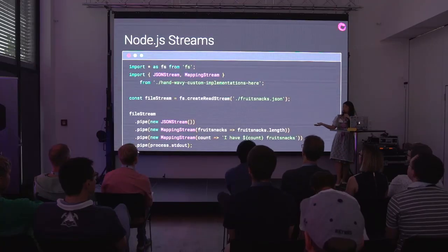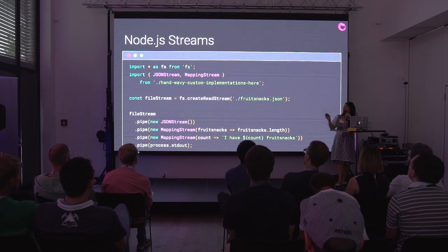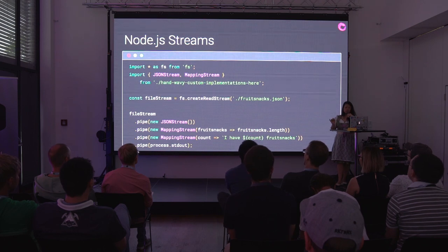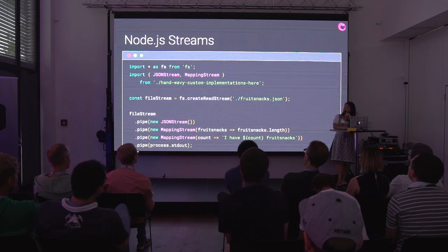Looking at Node streams code, we're doing the same thing as the other file. It gets a little hand-wavy because you have to implement your own custom duplex streams to do the transformation, so this wouldn't be a very straightforward process, but it's a good example of how to use Node streams.